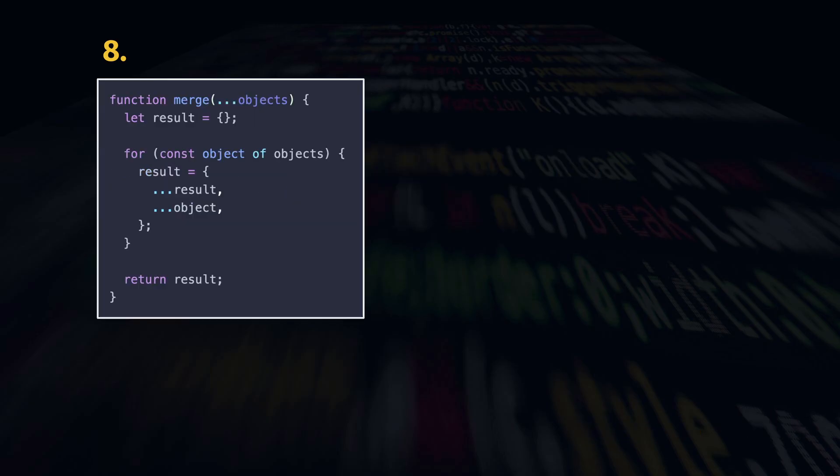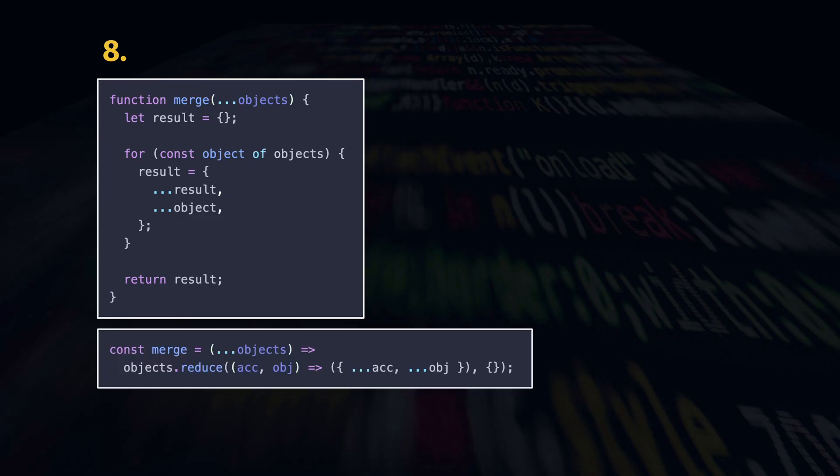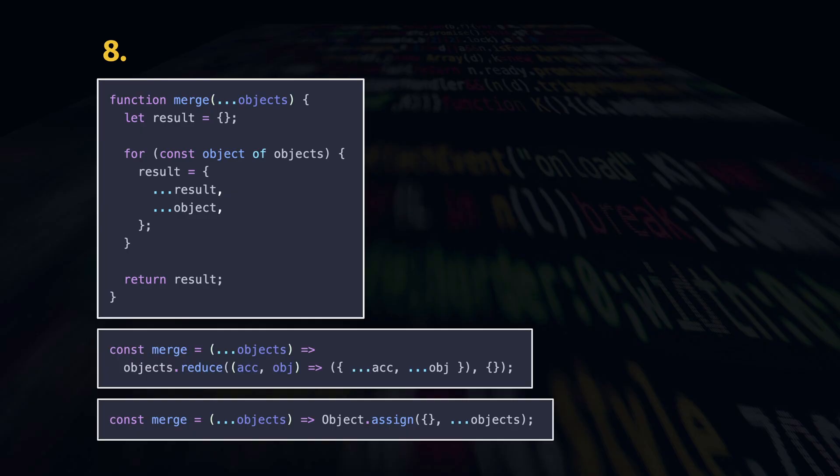We can use the spread operator to keep collecting new properties and overriding them if needed. This can also be implemented with reduce. Or even better just use Object.assign and spread the arguments.